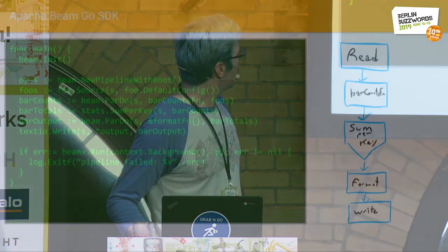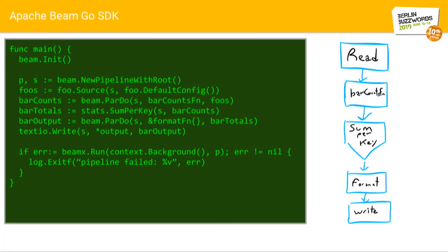So this here is what a very simple pipeline looks like in the Apache Beam Go SDK. And you can see how I broke it down into a pipeline, just like any other Beam SDK language. It has a concept of a pipeline. And then we connect together p-transforms to get p-collections and eventually write your pipeline out.